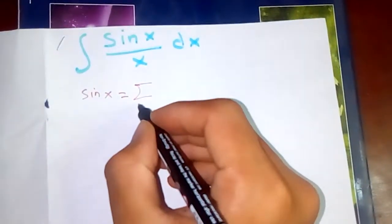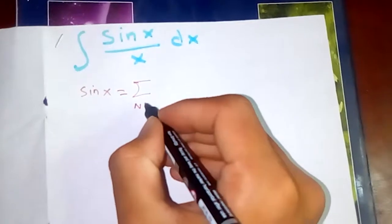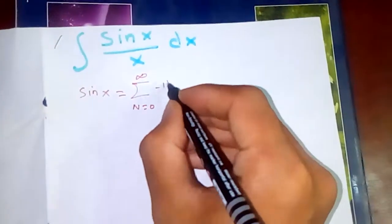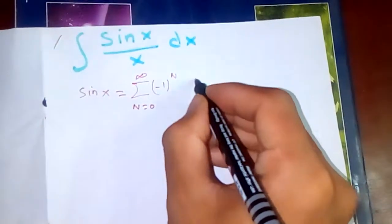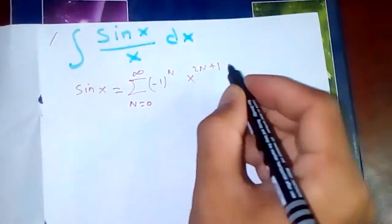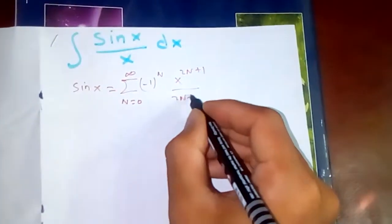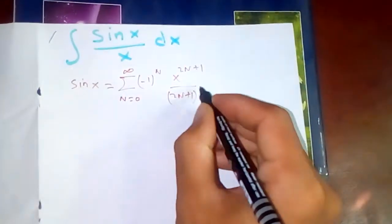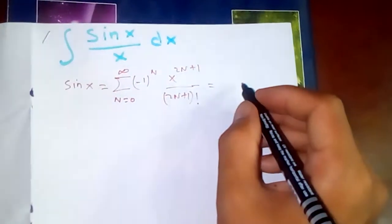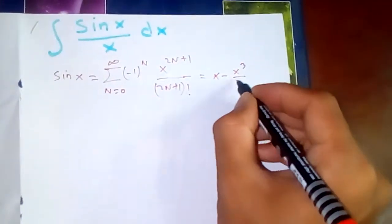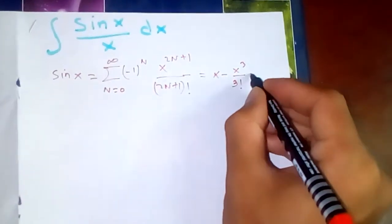sin(x) is nothing but summation from n equal to 0 to infinity of (-1)^n times x^(2n+1) over (2n+1) factorial. Or, meaning to say, if you simplify this: x minus x^3 by 3 factorial plus x^5 by 5 factorial minus and so on.